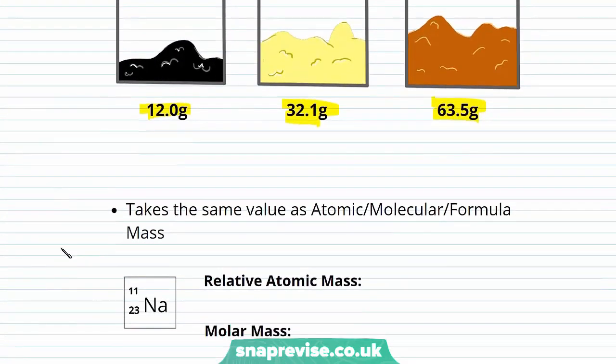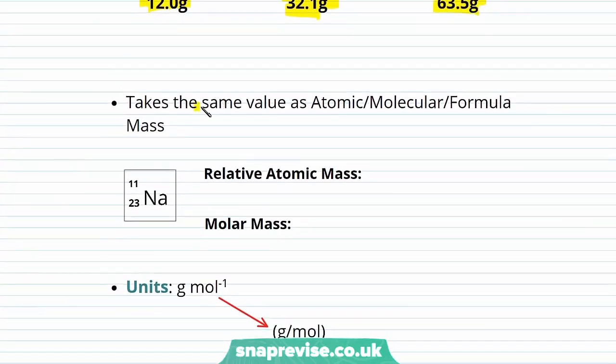So what is our molar mass? Well our molar mass takes the same value as the atomic, molecular or formula mass. If we look at sodium, the relative atomic mass of sodium is 23. We know that over here. Therefore the molar mass will also be 23. The units taken by our molar masses are grams per mole, which is written over here.